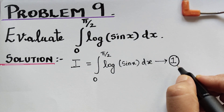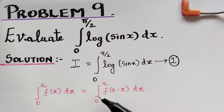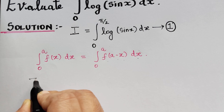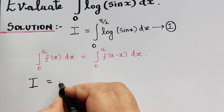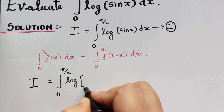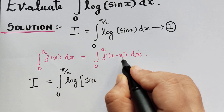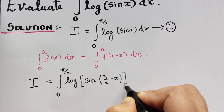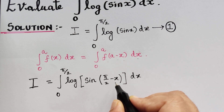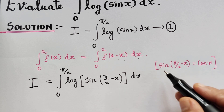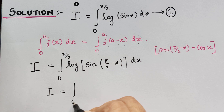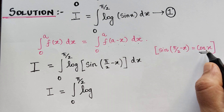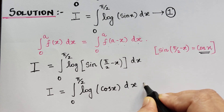By using the property which says that ∫₀ᵃ f(x) dx = ∫₀ᵃ f(a−x) dx, equation 1 can also be written as I = ∫₀^(π/2) log(sin(π/2 − x)) dx. Since sin(90° − x) = cos x by trigonometric identity, this becomes I = ∫₀^(π/2) log(cos x) dx, and we shall mark this as equation 2.